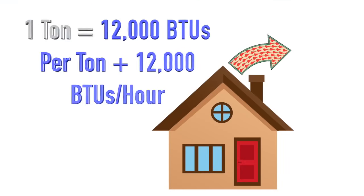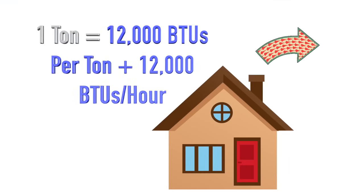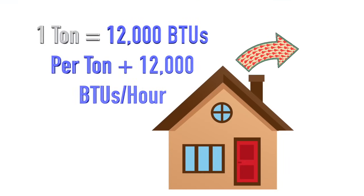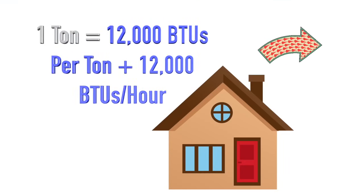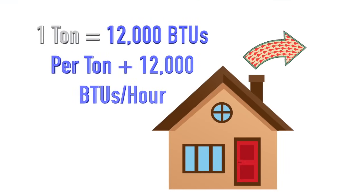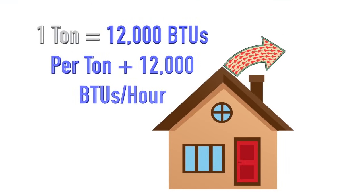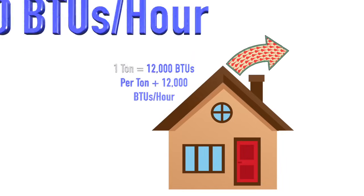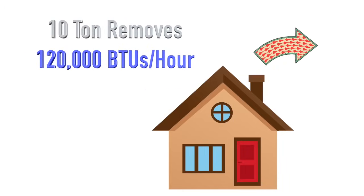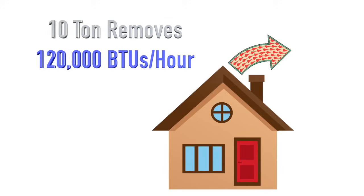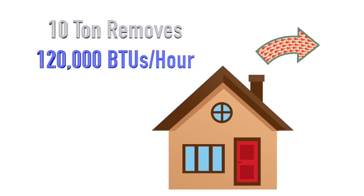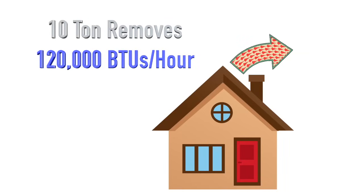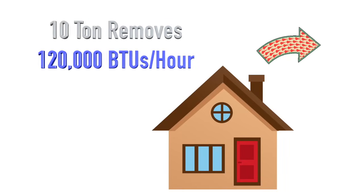An air conditioner that removes this much heat is a 1 ton AC. Each additional ton equals another 12,000 BTUs per hour. In other words, a 10 ton air conditioning unit removes 120,000 BTUs per hour.